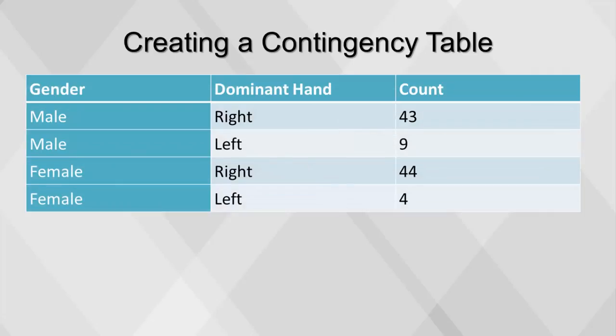To create a contingency table, the first step is to aggregate the original dataset along two dimensions, gender and handedness, and count the number of rows for each combination of values. Since there are two possible values for gender, male and female, and two possible values for dominant hand, left and right, there are four total possible combinations: male and right, male and left, female and right, and female and left.